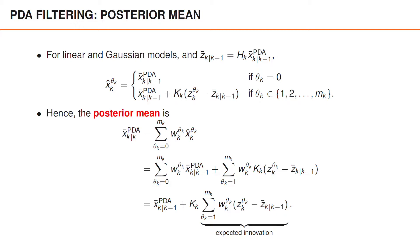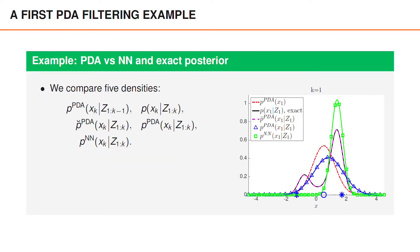Note that this looks like a standard Kalman filter update, where the innovation has been replaced by this expected innovation. And computing the posterior mean like this gives you a slightly faster implementation.